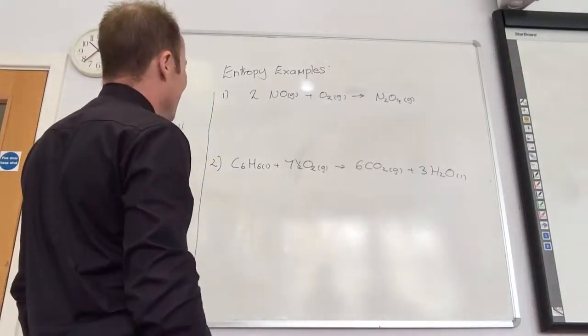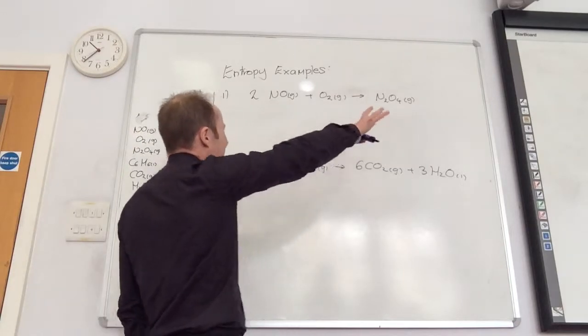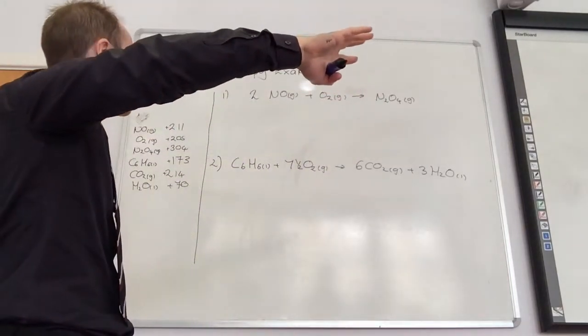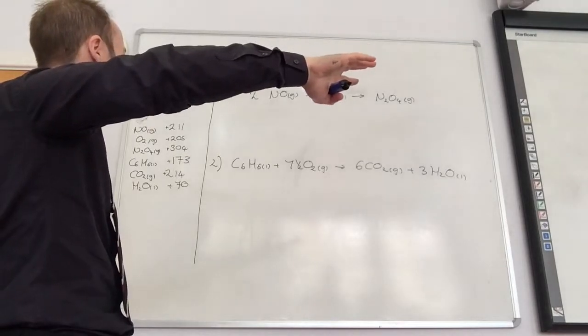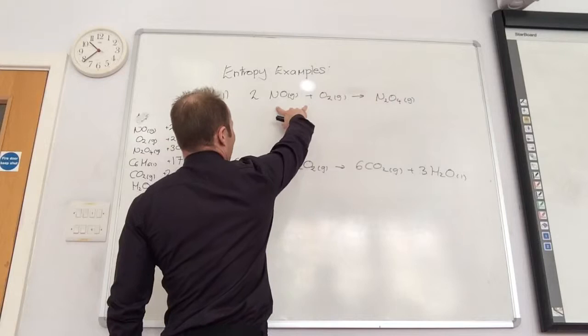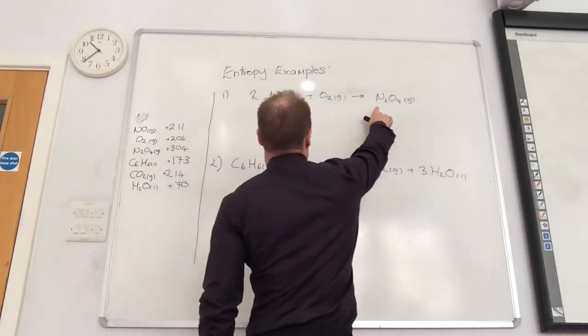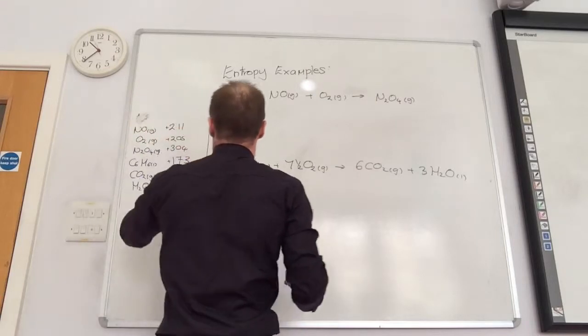Right, so let's have a go at doing these together. First example, let's have a feeling what we think this is going to be. Is it going to be negative? Yeah, looks like it's going to be negative because I've got three gas molecules becoming one. So that's not looking good. Let's have a look at the values here.